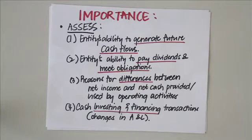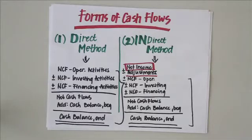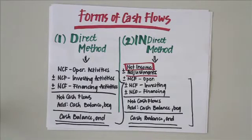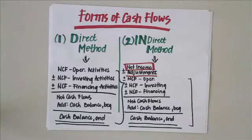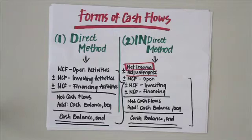Basically these show the changes in your assets and liabilities. There are two ways of presenting the statement of cash flows: the direct and indirect method. With the direct method, you compute for the net cash flows from operating, investing, and financing activities, then add the beginning cash balance to get the ending cash balance. The indirect method is a more complex version — instead of proceeding directly to computing net cash flows from operating activities, you begin with net income then add and deduct certain adjustments.